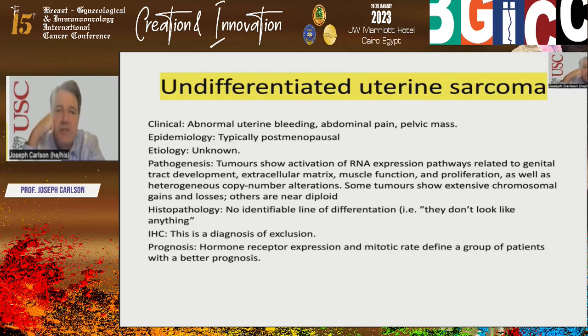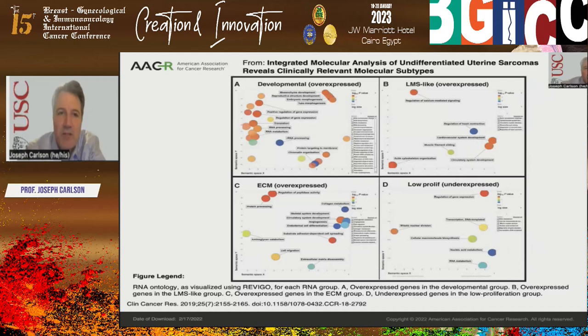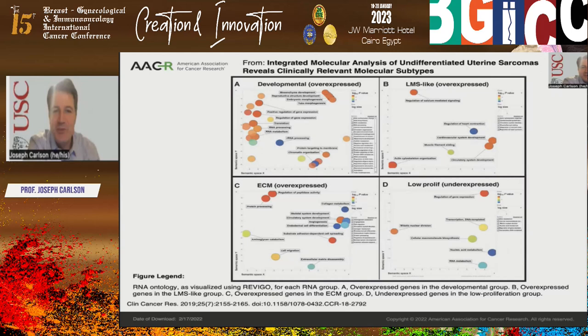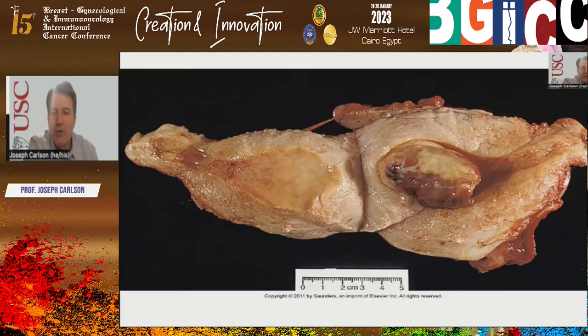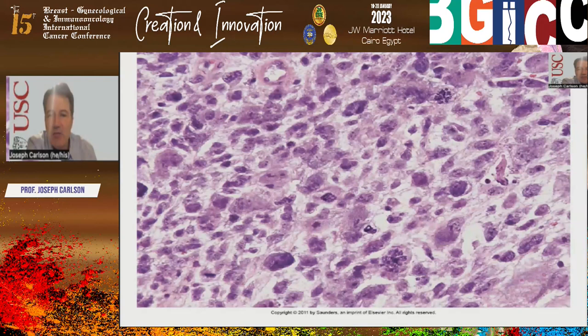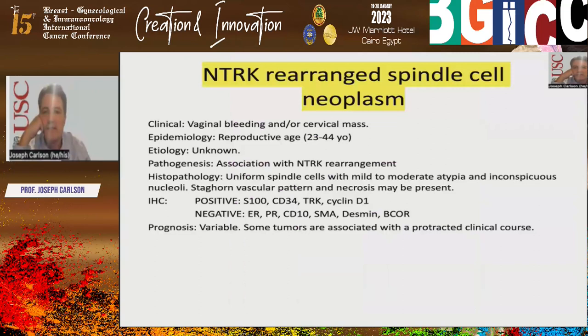Undifferentiated uterine sarcoma is a diagnosis of exclusion — tumors with no identifiable line of differentiation. Research has identified four molecular subgroups: one overexpressing developmental genes, one leiomyosarcoma-like, one overexpressing extracellular matrix genes, and one with low proliferation. Gross photo shows necrosis, and histology demonstrates high-grade features with multiple mitoses.